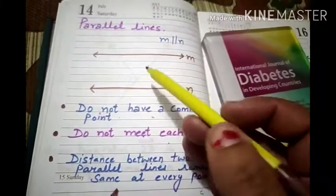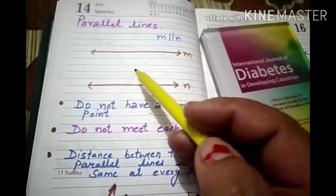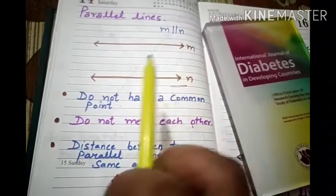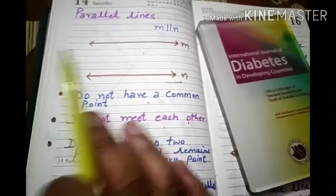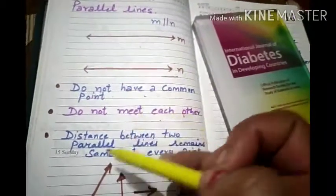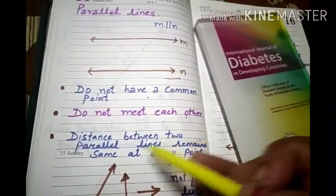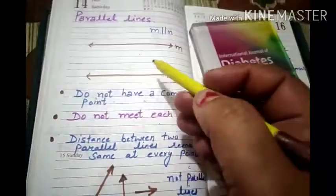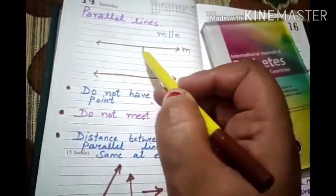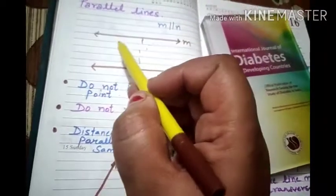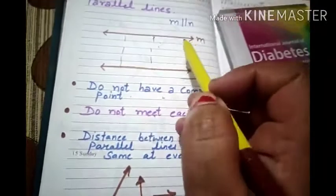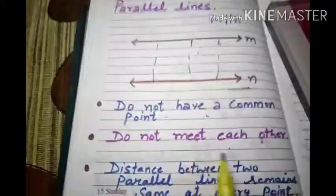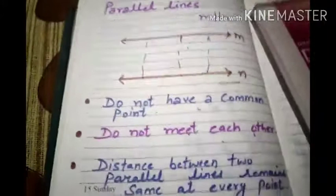Parallel lines do not meet each other. As you see, if you look at the distance, the distance must be the same.